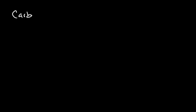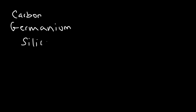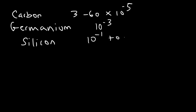Semiconductors or semimetals like carbon graphite, germanium, and silicon have much higher resistivity. Carbon graphite is about 3 to 60 times 10 to the minus 5 — much higher than a typical metal, but it still conducts electricity fairly decently and makes good resistors. Germanium is on the order of 10 to the minus 3. Silicon ranges from 10 to the minus 1 to 10 to the 1, so silicon is not a good conductor — it conducts only a small amount of electricity.